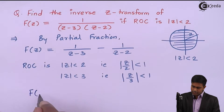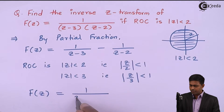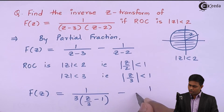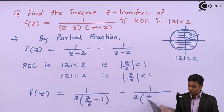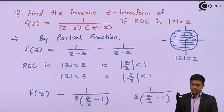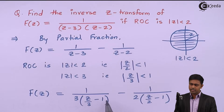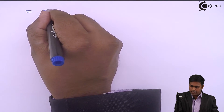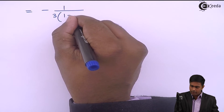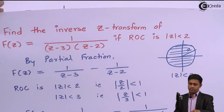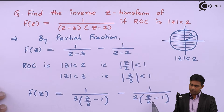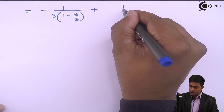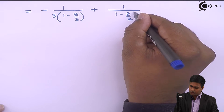To bring the terms z/2 and z/3 into the functions, we take 3 common from the first term and 2 common from the second. So F(z) = 1/[3(z/3 − 1)] − 1/[2(z/2 − 1)]. Taking the negative sign outside each bracket gives: F(z) = −(1/3) · 1/(1 − z/3) + (1/2) · 1/(1 − z/2).